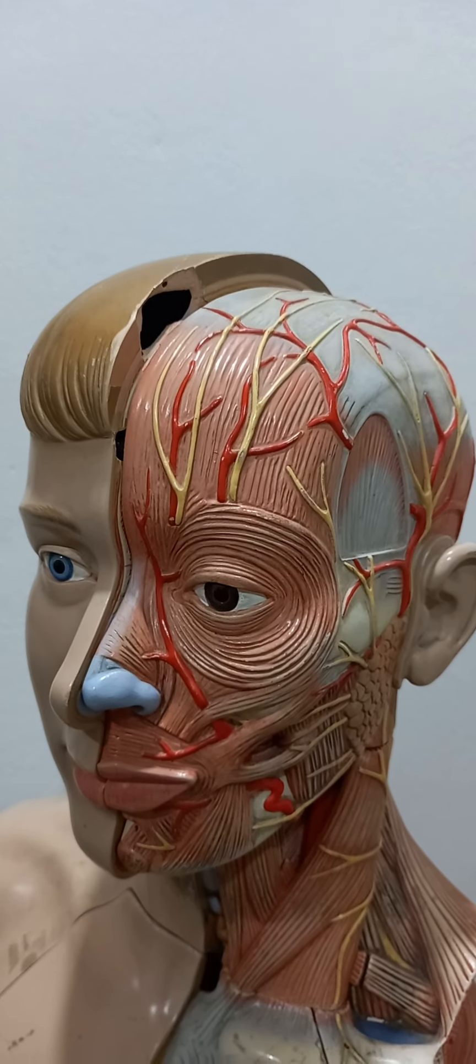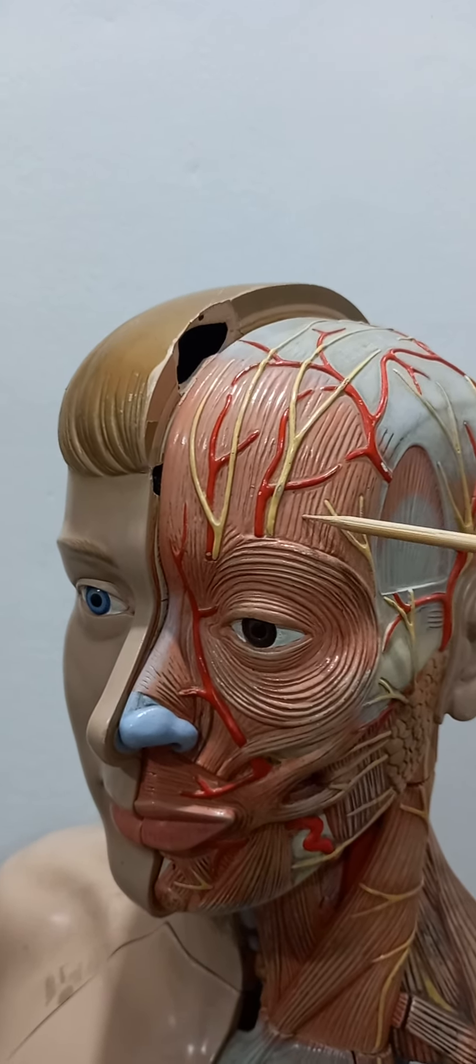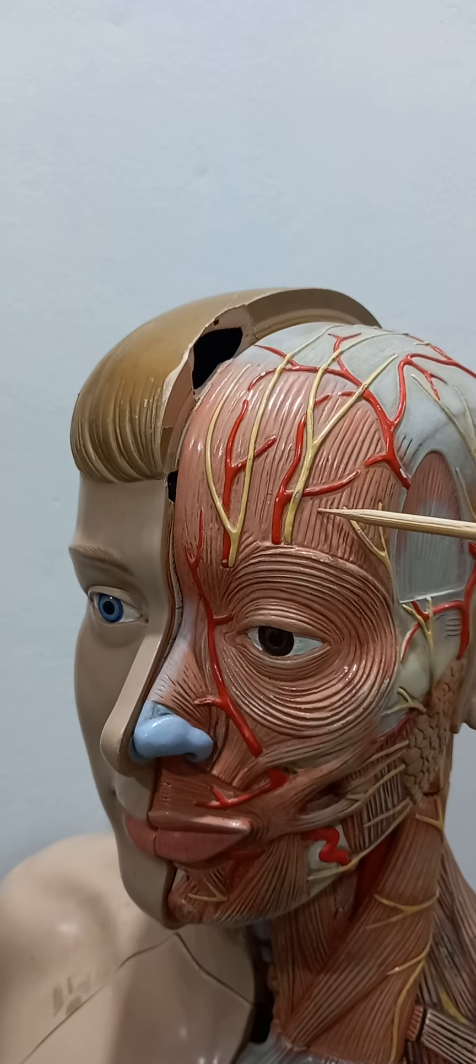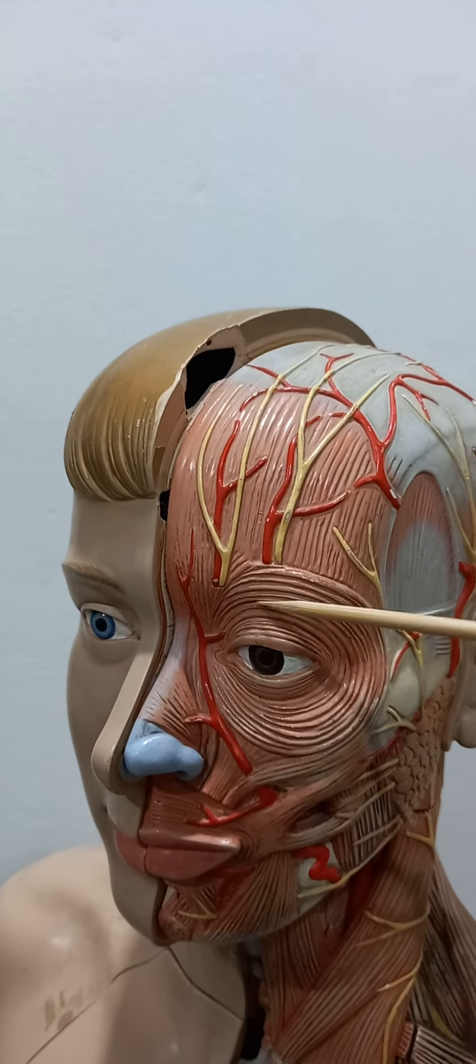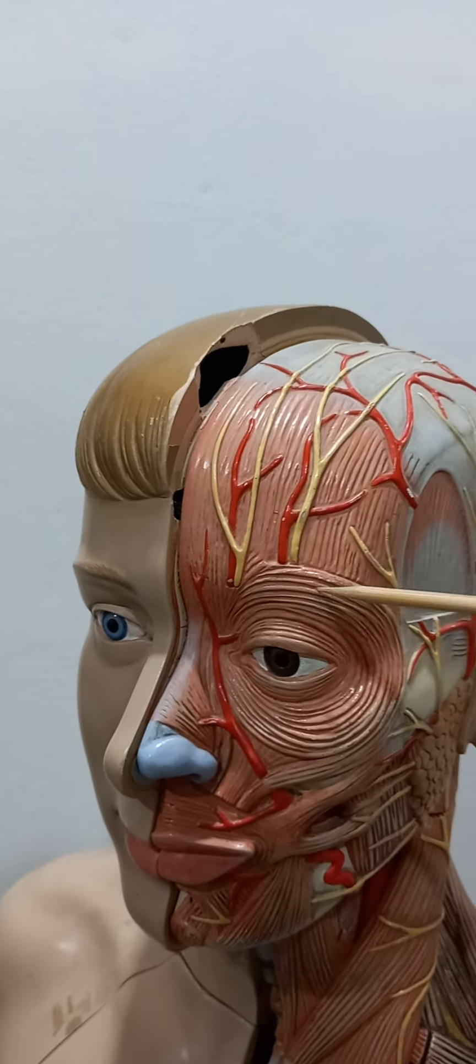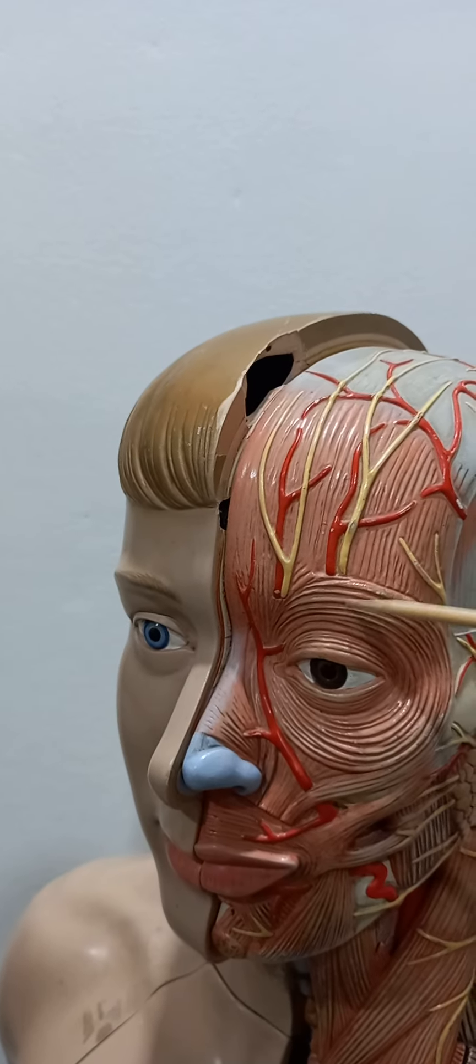Today we will do an overall spotting of the head and eye. First of all, see that this muscle is the frontal belly of occipitofrontalis. Then here you can see this is orbicularis oculi, orbital part and palpebral part.